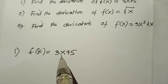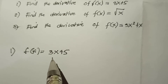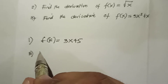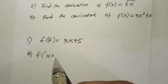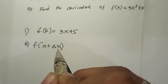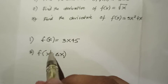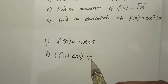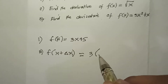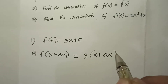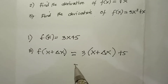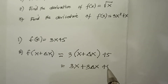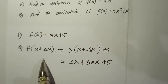The first step: we need to replace the value. So f(x + Δx) — by replacing x, this x will be replaced by x + Δx. So it is equal to 3(x + Δx) + 5. This is our first step.